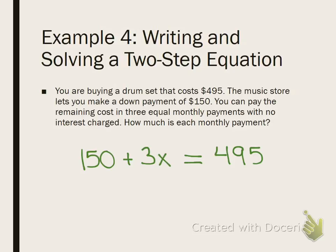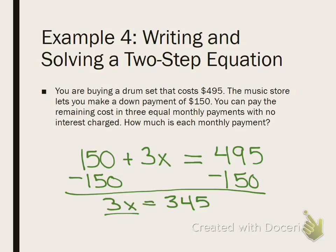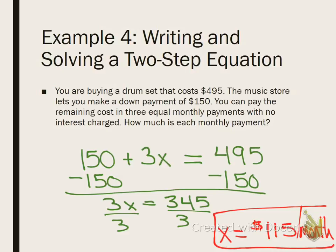What do I do first? Subtract 150 from both sides. Now, 3x equals 345. And what do I do to both sides? Divide by 3. $115 per payment. I guess I should have labeled. How many points are you going to miss if you forget to label? Minus 1. $115 per month is your payment. If you understand that, that's everything you need to know for 3.1. You're welcome.